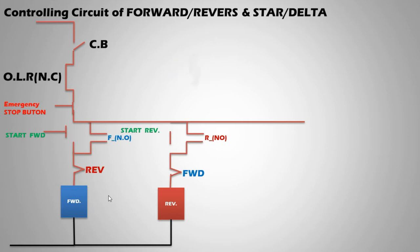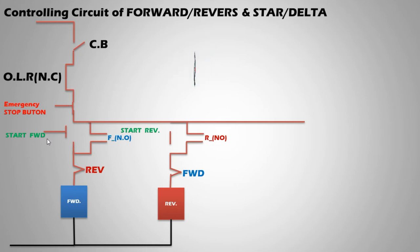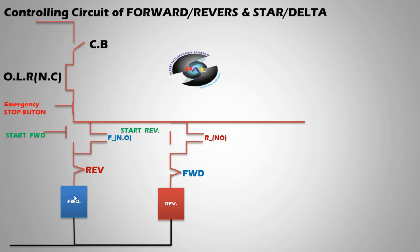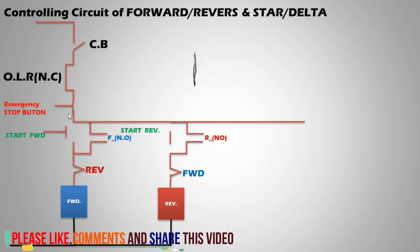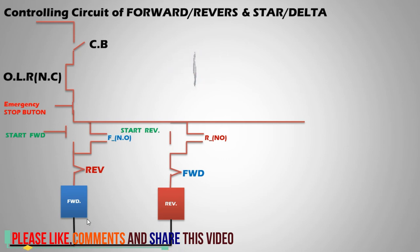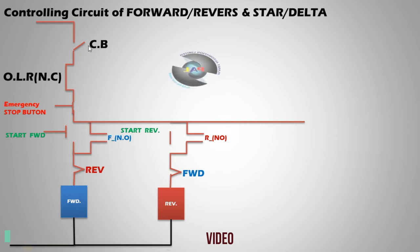There are three push buttons: number one and number two are start buttons — start forward and start reverse. When we start forward, the forward contactor runs. The emergency stop button stops all operations immediately at any time. This is the forward connection and this is the reverse connection. The circuit breaker terminals one and two — one is directly connected to the line, two is the output.